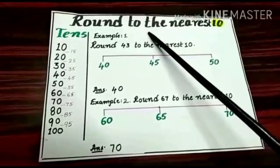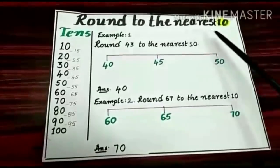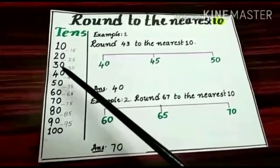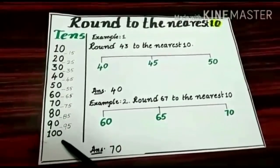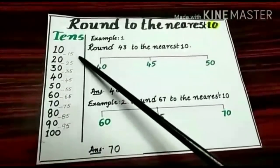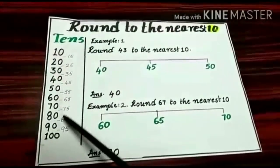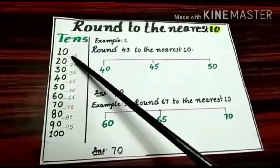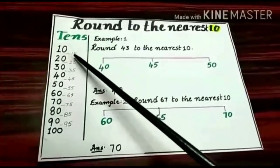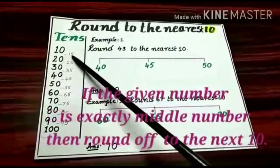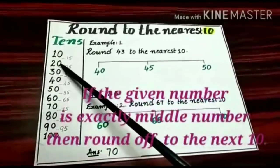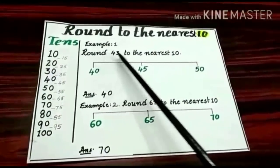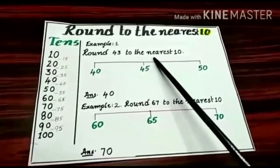Are you ready to learn about how to round to the nearest 10? What are the 10s? 10, 20, 30, 40 and so on, up to 100. The middle numbers between the 10s are also given. If the given number is less than the middle number, round down to the before 10. If the given number is more than the middle number, round up to the next 10. Let us go for the examples — round 43 to the nearest 10.